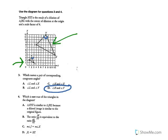Number 4 says which is not true of the triangles in the diagram. Option A says XYZ is similar to JKL because a dilated image is similar to the original figure — that's true. Option B says the ratio JK over XY is equivalent to the ratio KL over YZ. Since those are corresponding, that's true — the ratios of similar figures are the same.